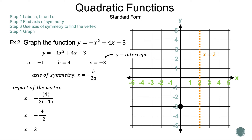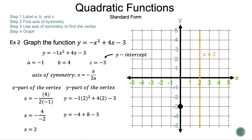Let's draw the axis of symmetry on the graph. Our vertex is somewhere on that dotted line. We already have the x part of the vertex, so let's calculate the y part by substituting 2 for each x. So we have y is equal to negative 1 times 2 squared plus 4 times 2 minus 3. And 2 squared times negative 1 is negative 4, and 4 times 2 is 8, and negative 4 plus 8 minus 3 is 1. So y is equal to 1.